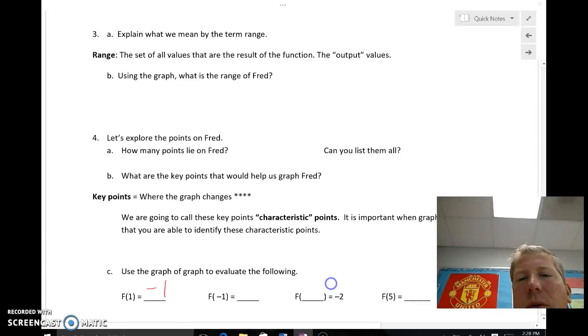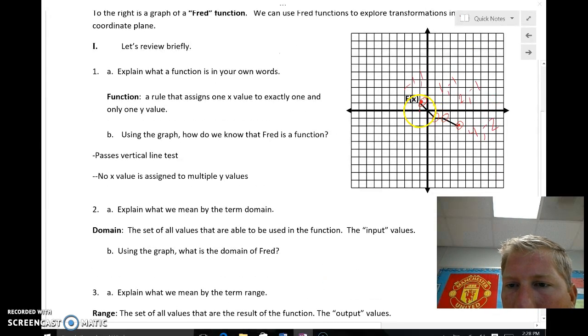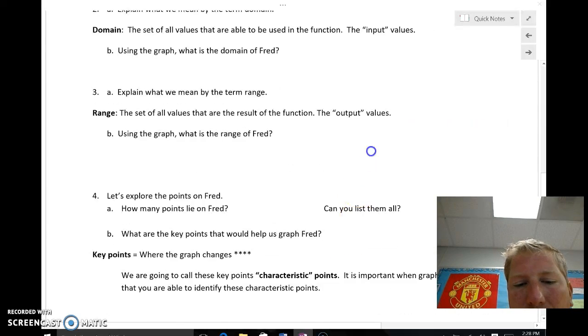All right, if the x value is negative 1, we would go left 1, and that would make us go up to try to find where the graph is, and it's right here at positive 1. So the y value, or the output, when our input is negative 1, will be positive 1.